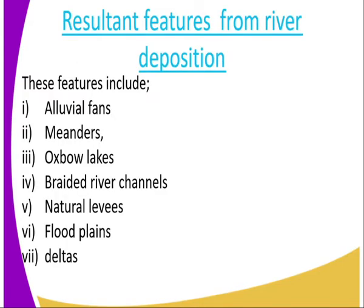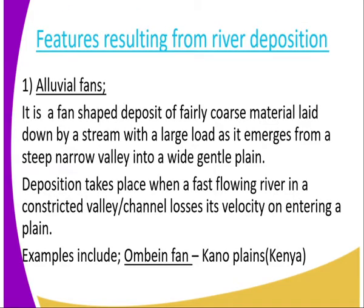We start by looking at the features that result from river deposition. We have the alluvial fans. We also have the meanders. We have the oxbow lakes. We also have the braided river channels, natural levees, floodplains, and deltas.